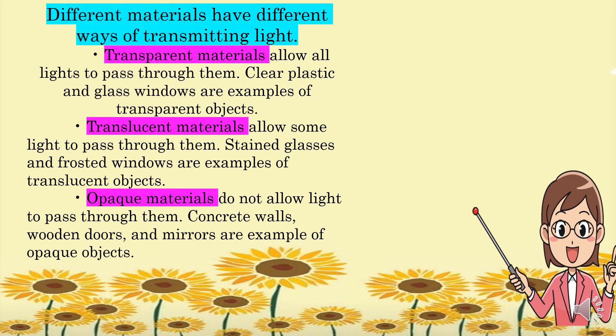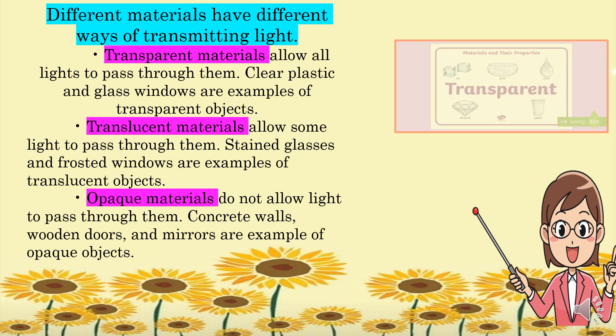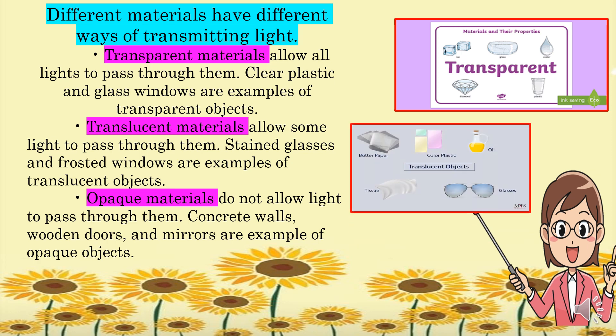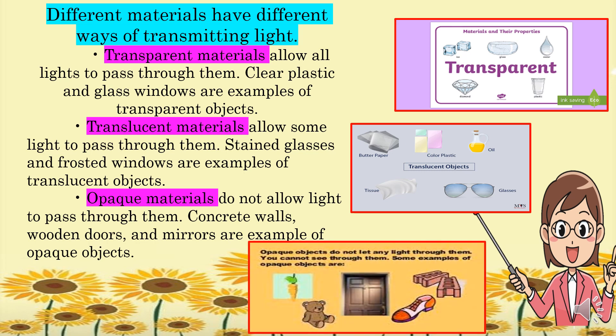There are different materials that have different ways of transmitting light. First, transparent materials allow all light to pass through them — clear plastic and glass windows are examples. Translucent materials allow some light to pass through them, like stained glasses and frosted windows. Opaque materials do not allow light to pass through them, like concrete walls, wooden doors, and mirrors.